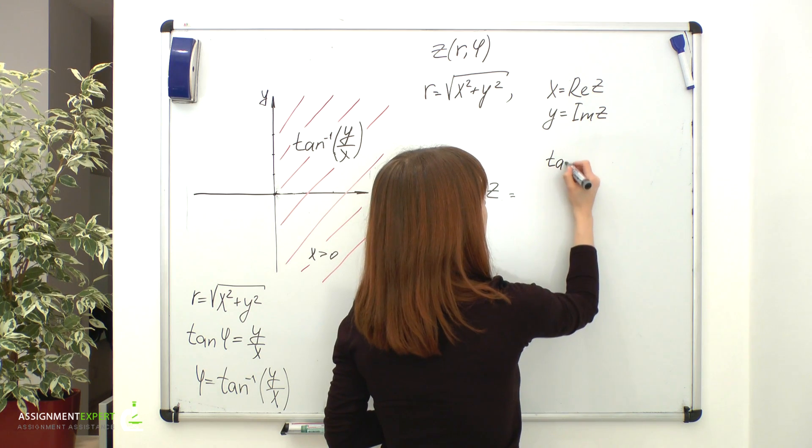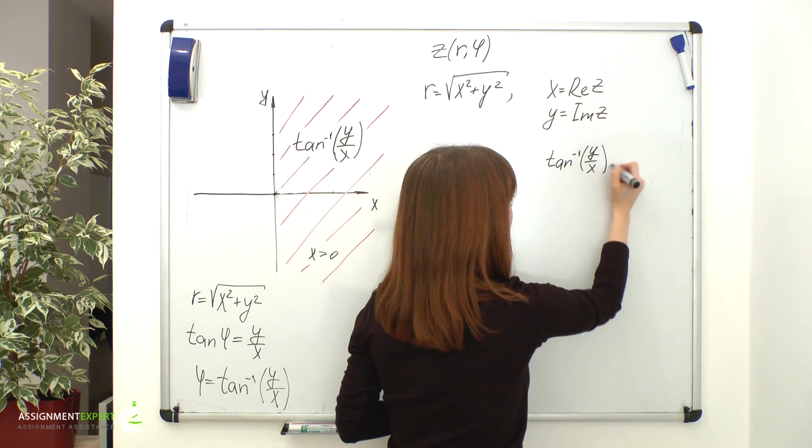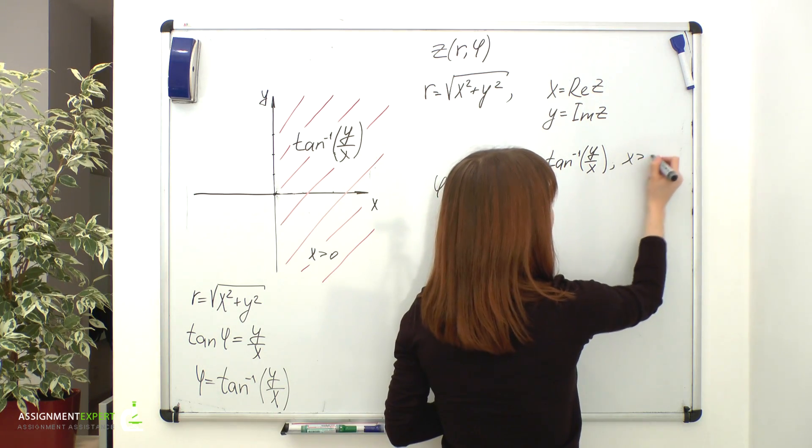Phi is equal to inverse tangent of y over x for x being greater than zero.